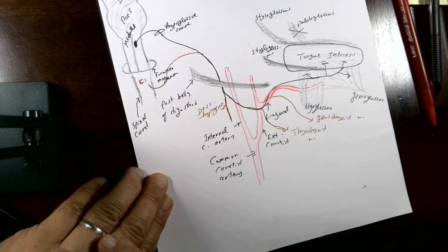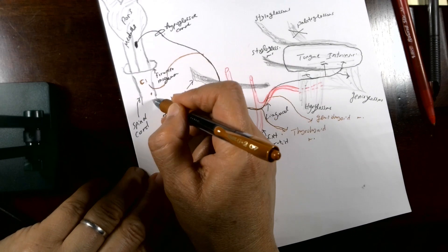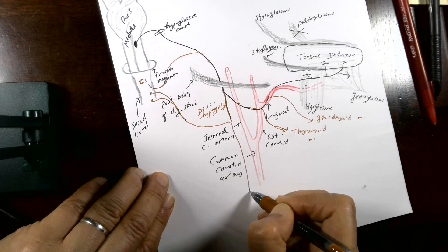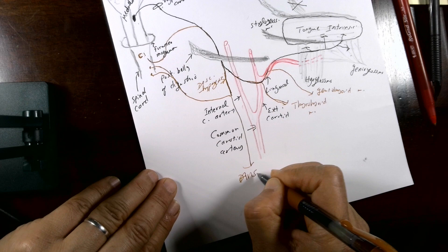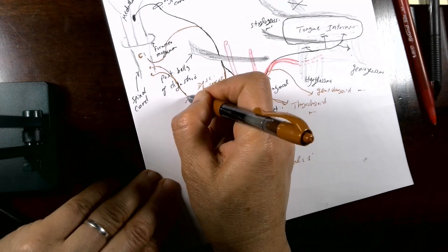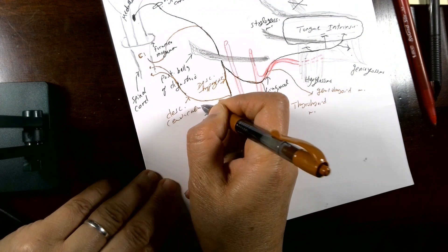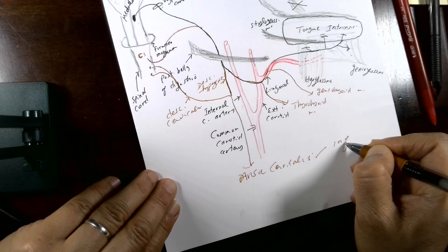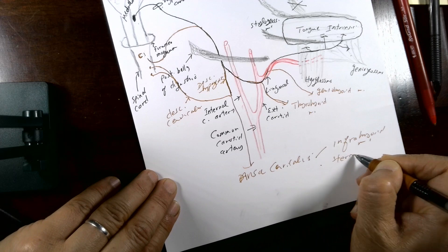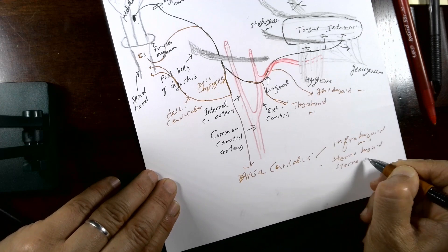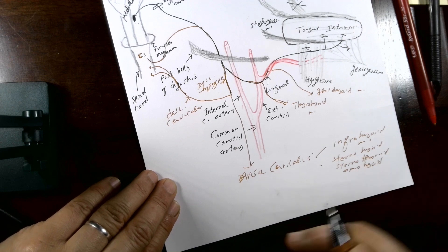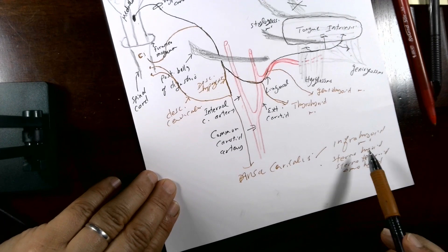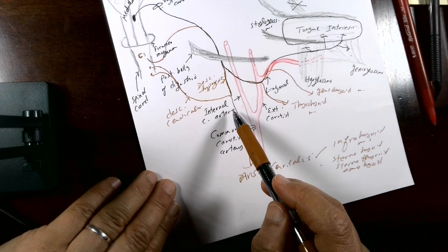The descending hypoglossal nerve is joined by C2 and C3, which we call the descending cervicales. Together they form a large nerve called the ansa cervicalis, which gives branches to the infrahyoid muscles including sternohyoid, sternothyroid, and omohyoid muscles. Importantly, keep in mind that those muscles are not supplied by the hypoglossal nerve itself — they are supplied by the cervical nerves represented by the ansa cervicalis.